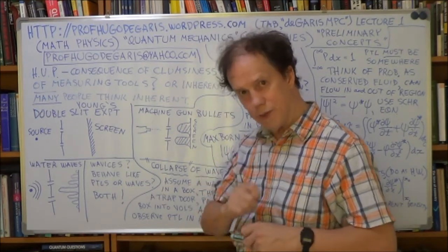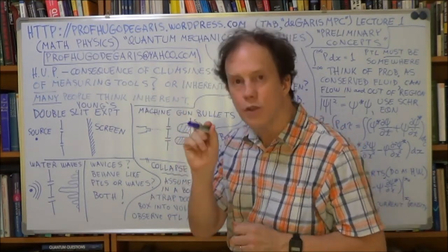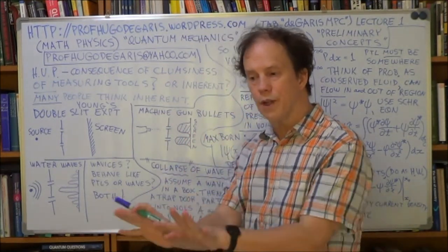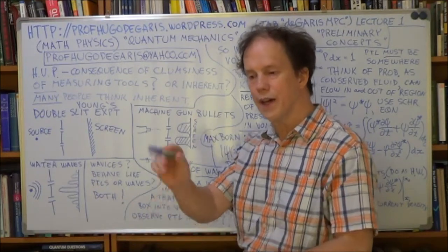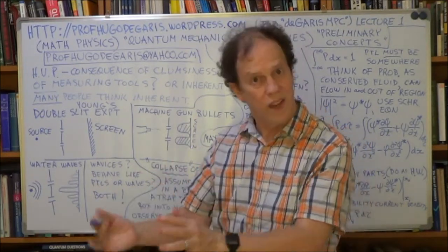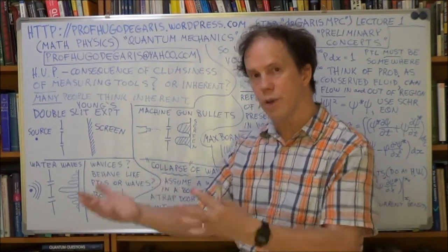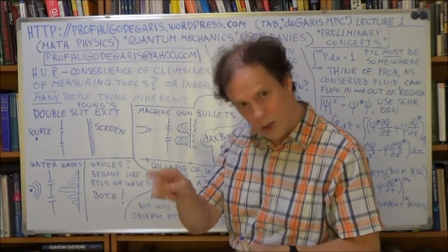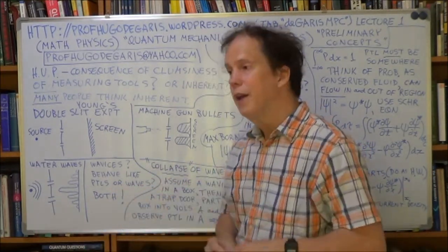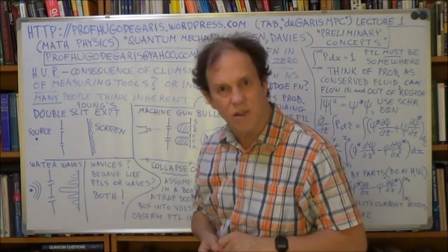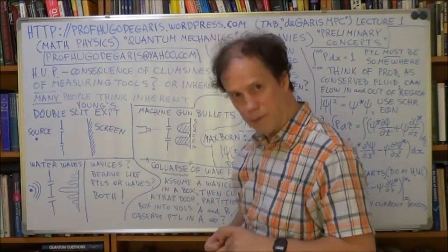So it's more subtle and the psi cannot be physical because from Schrödinger's equation, Schrödinger's equation has an i, square root of minus one in the equation itself. Therefore, when you solve that Schrödinger equation, your psi function will involve complex numbers due to the i in the equation itself, and complex number things cannot be physical. You've got a problem there.